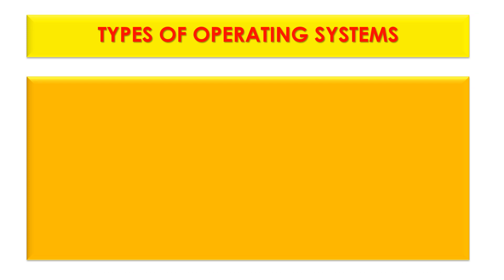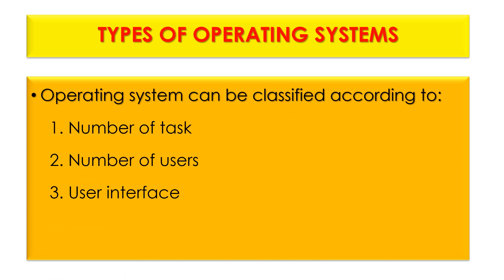Now let us look at the types of computer operating systems. Operating systems can be classified according to the number of tasks they can perform, the number of users they support, and their user interface.